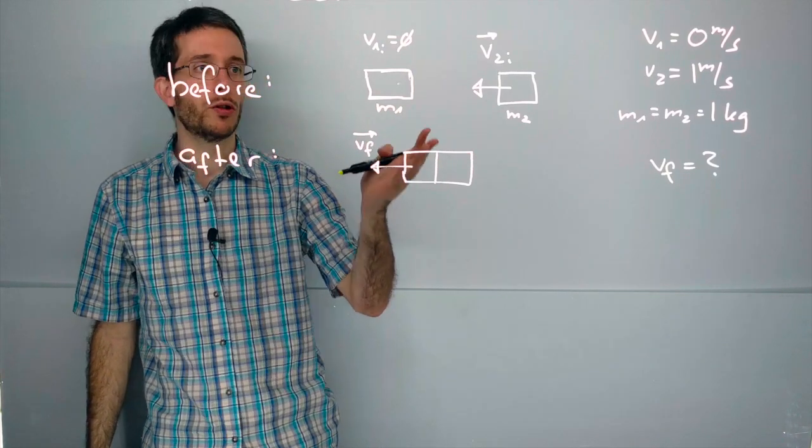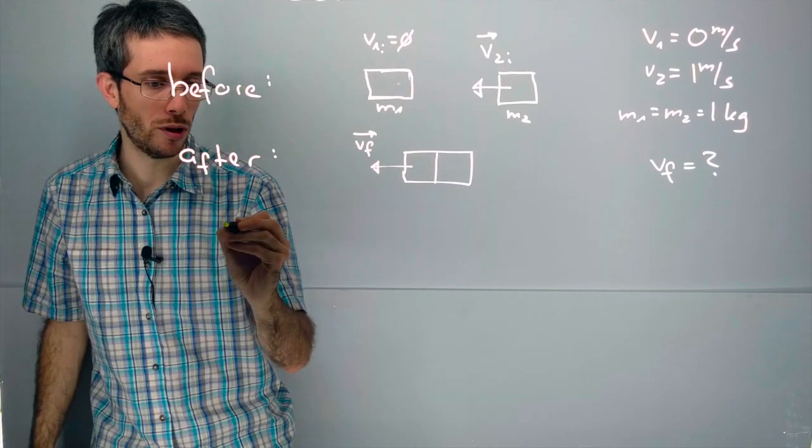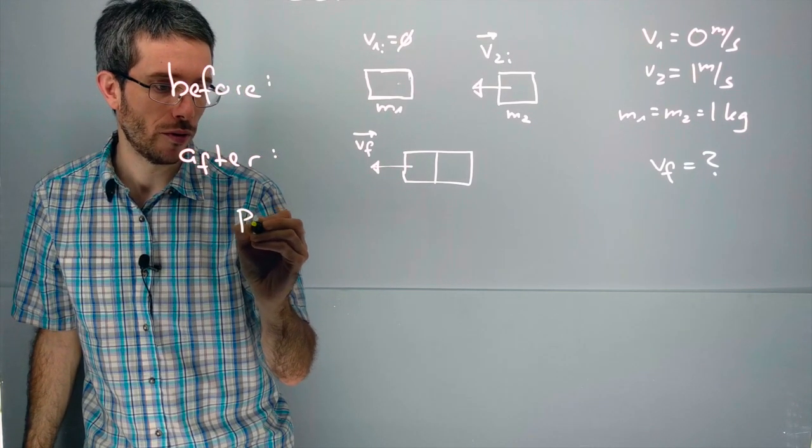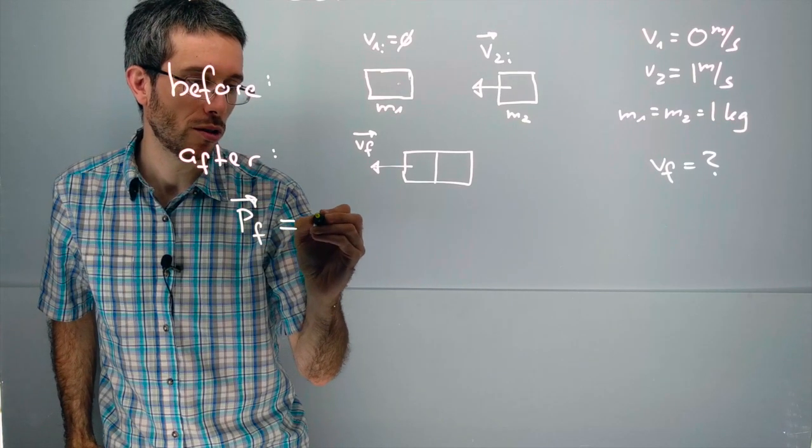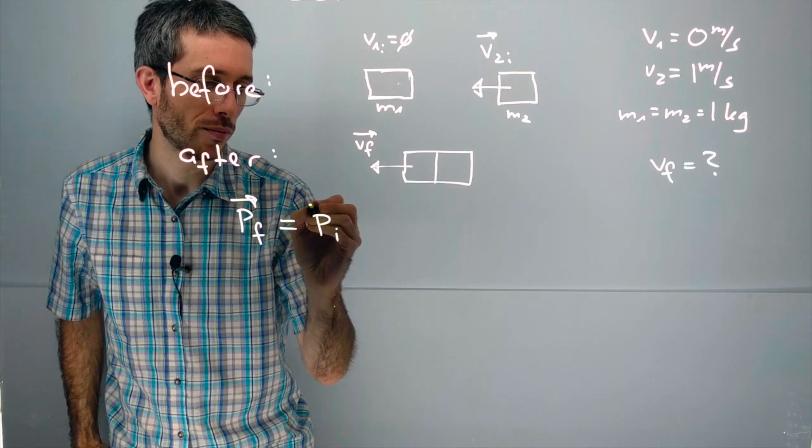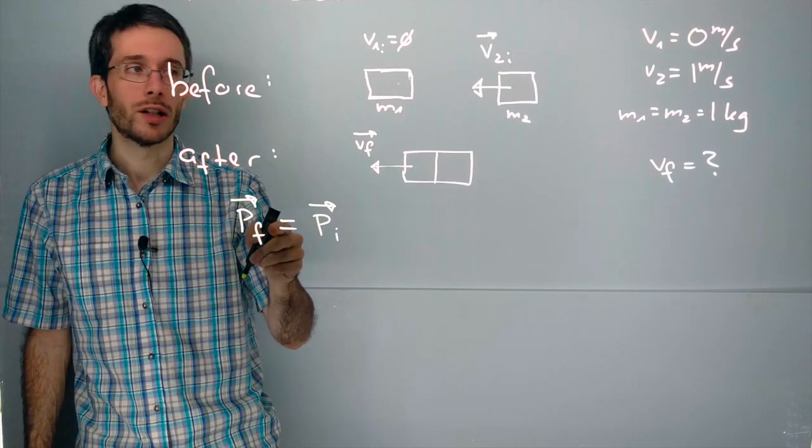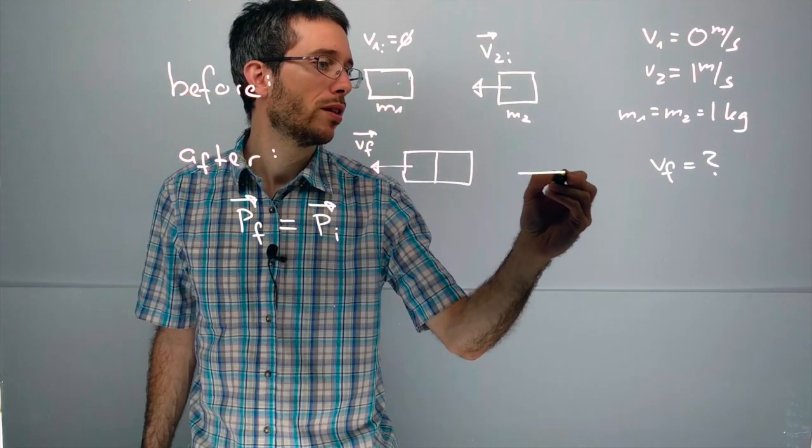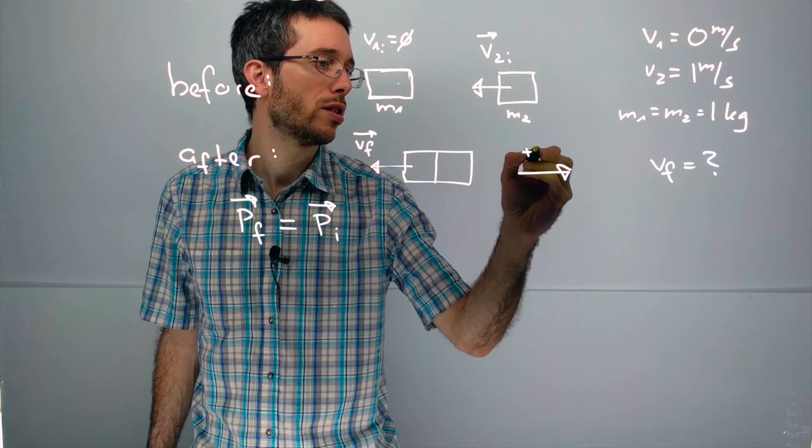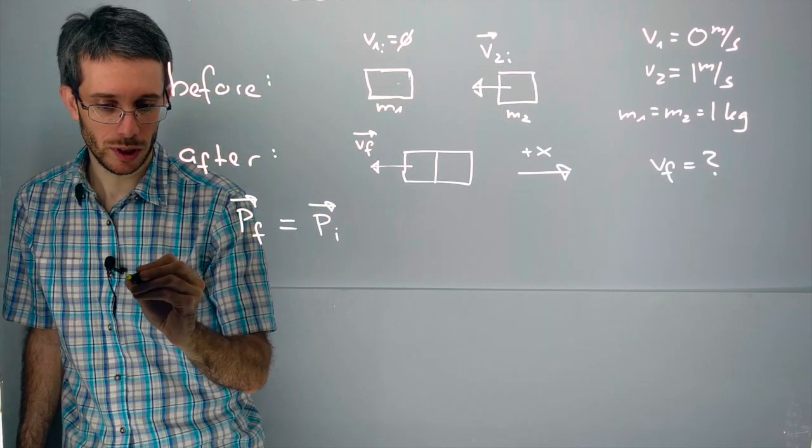Now to solve this we're going to use that linear momentum is conserved. Therefore the momentum final must be equal to the momentum initial. This is a vector equation therefore we should specify a coordinate system. So let's assume that to the right as usual is plus x. So in x direction